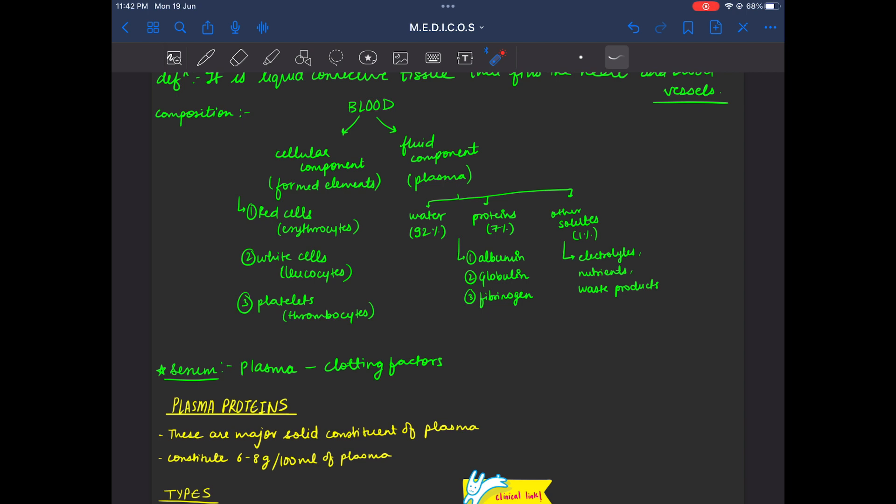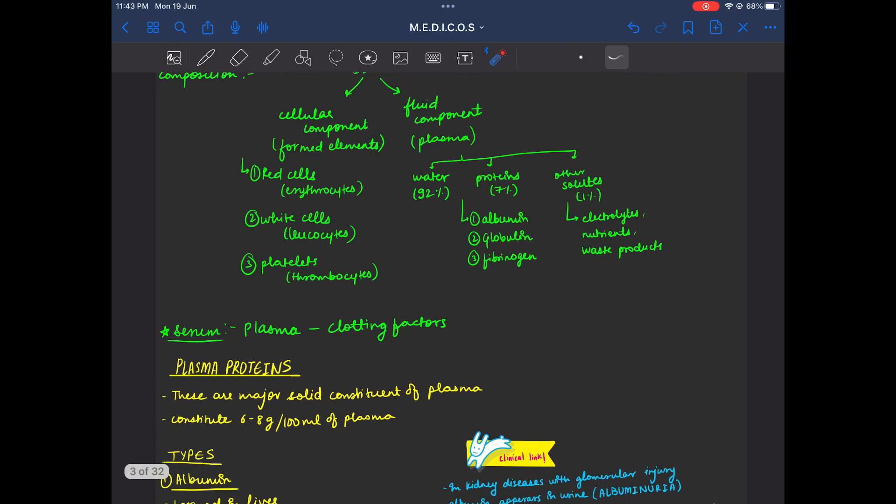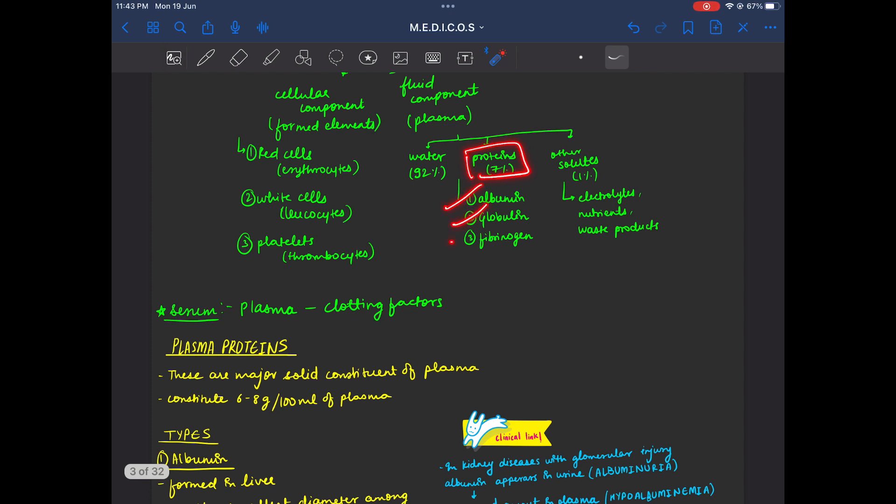Plasma composition: Water 92%, plasma proteins 7% and other solutes 1%. Plasma proteins are albumin, globulin and fibrinogen. Other solutes are electrolytes, nutrients and waste products.